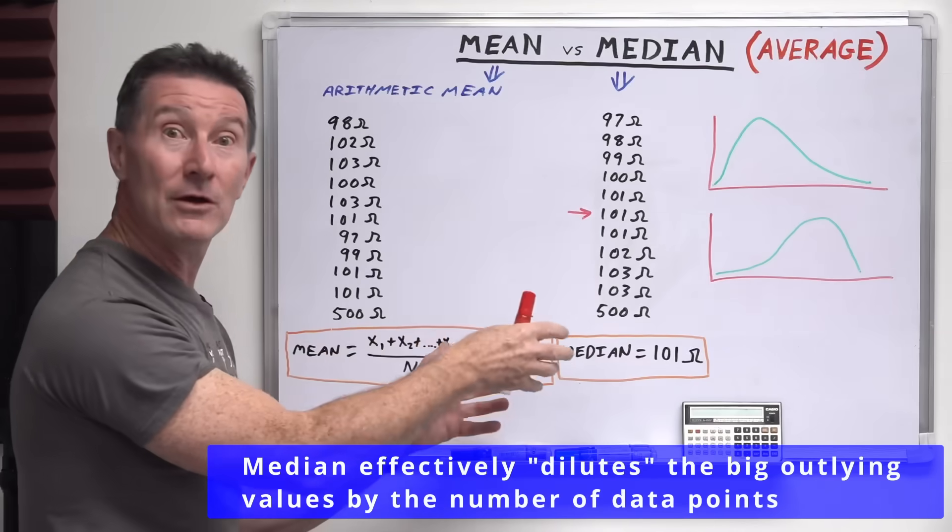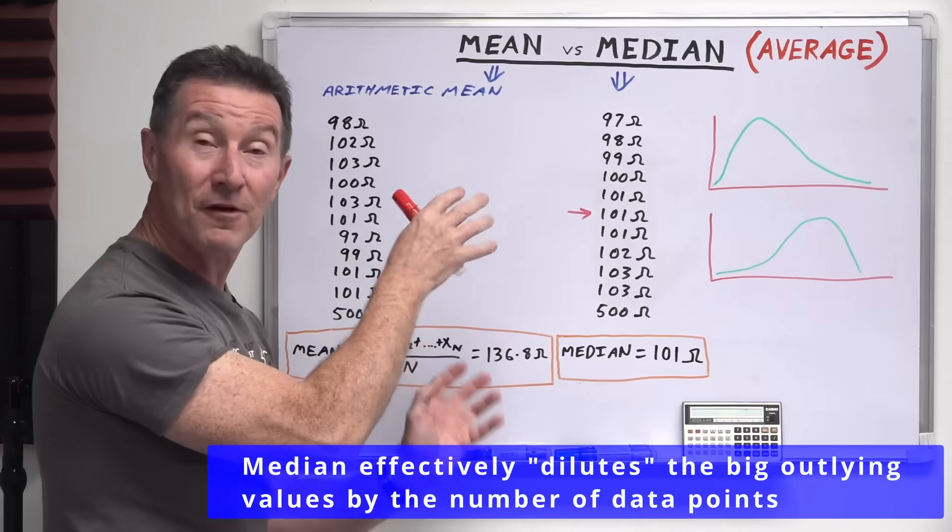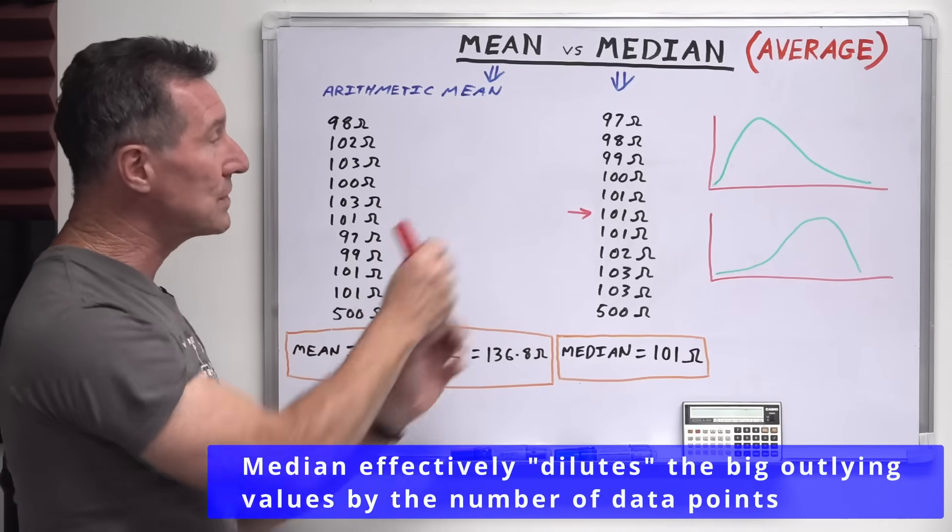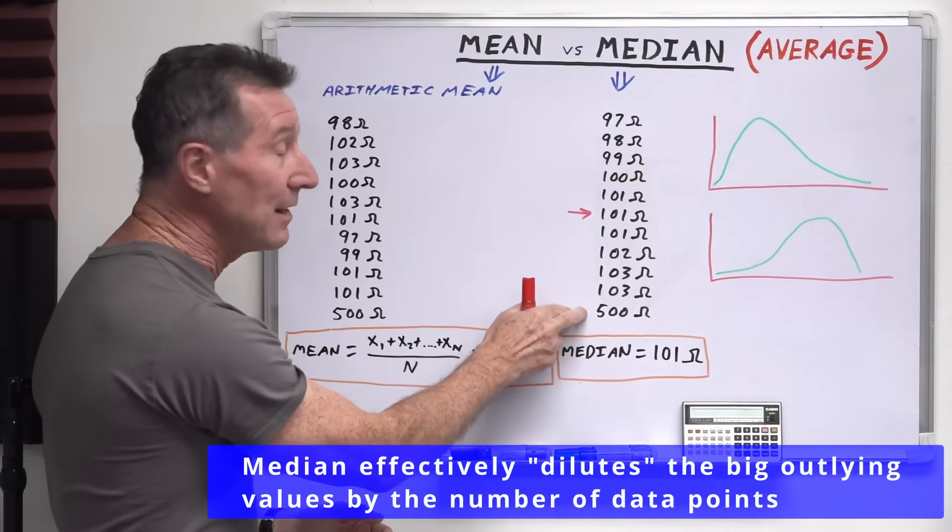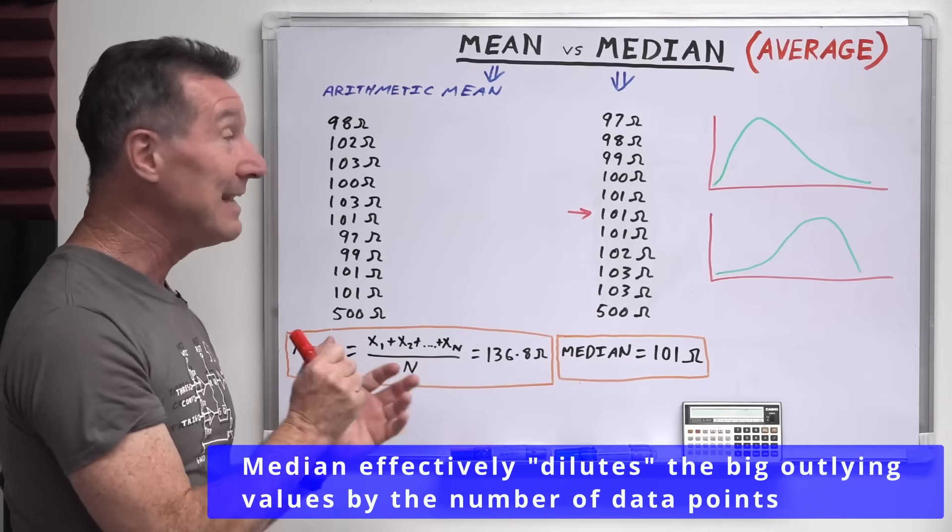But because it's only a single value in a data set of 11 values, but it might be a couple of values in a data set of a thousand houses that sold or something else, then it really, those become completely insignificant.